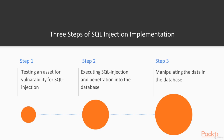On the first step, a hacker tests an asset for vulnerability to SQL injection. If he finds out that a target is vulnerable to SQL injection, he moves to step two — executing SQL injection and penetrating into the database. After that, when he is inside the database, he can do everything he wants with your data: he can manipulate it and even destroy it.